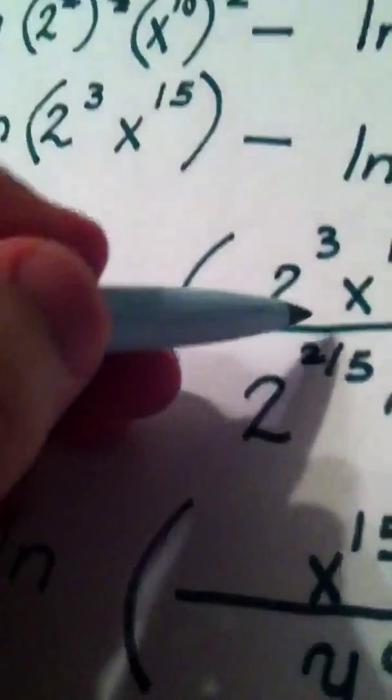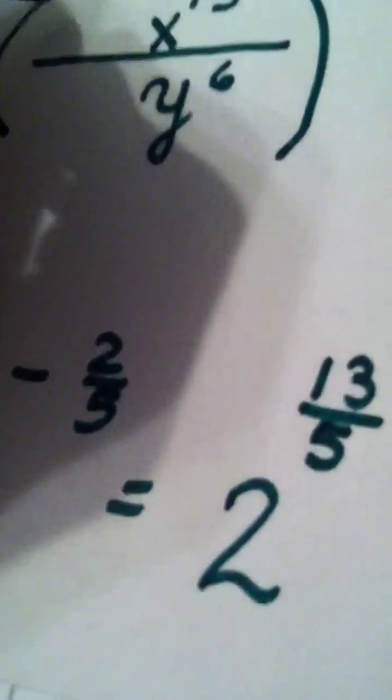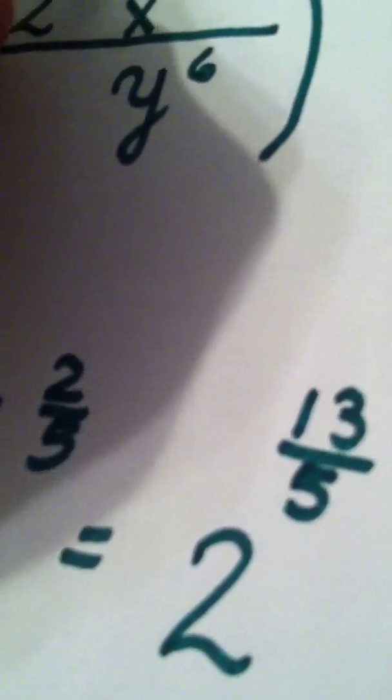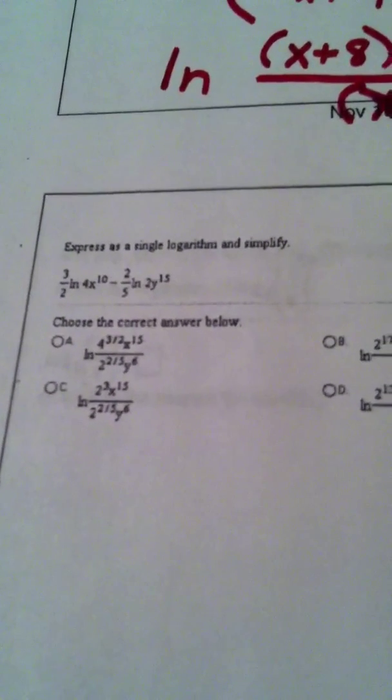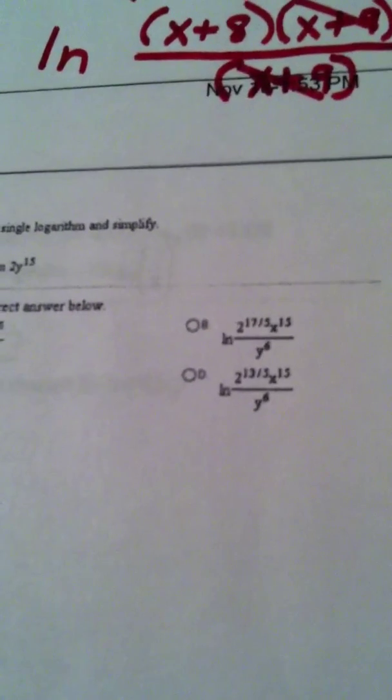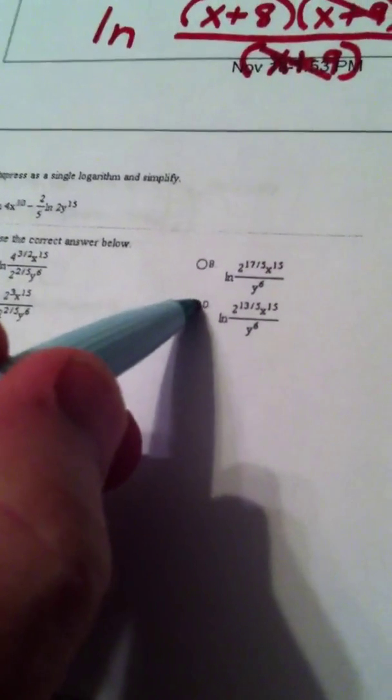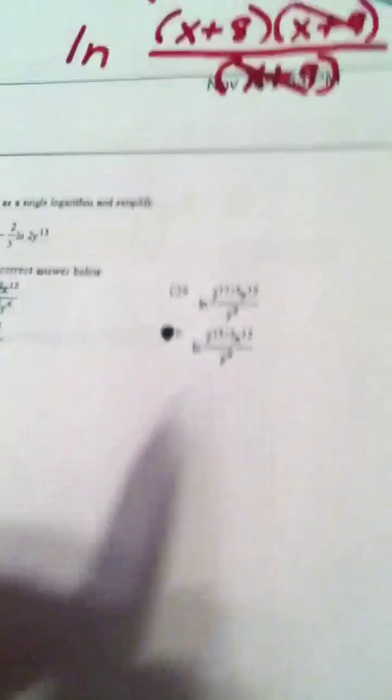Yuck! So, this ugly thing becomes 2 to the 13 fifths power. This, my friends, is our answer to that nasty problem. Now, if I look back at their choices... Let's see if I can focus in. They're tiny. But, it looks like it would be choice D. Yep! That matches us. The natural log of 2 to the 13 fifths x to the 15th over y to the 6th.